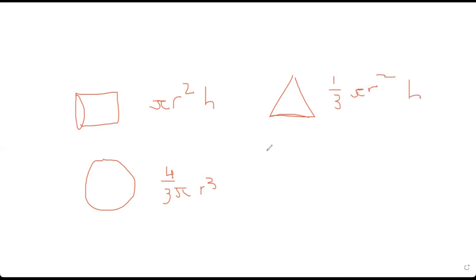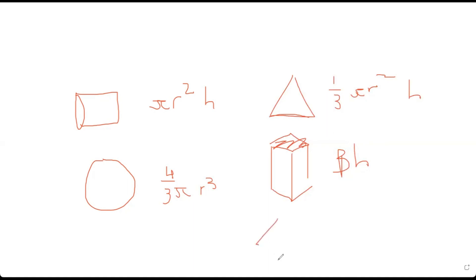The two other main ones are prisms and pyramids. For a prism — say a rectangular prism — the volume is base times height: you find the area of the base and multiply it by the height. It could be a hexagon or anything. For a pyramid, it's (1/3) base times height, like with the cone. Those are basic volume formulas from geometry.